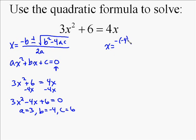So then we're going to substitute these numbers into our quadratic formula. We get negative of negative 4, so put negative 4 in for b. Plus or minus negative 4 squared minus 4 times 3 times 6. And that's all over 2 times a, which is 3.